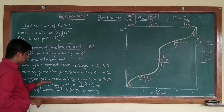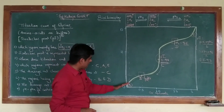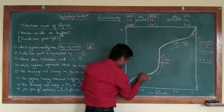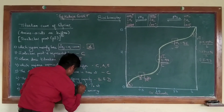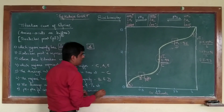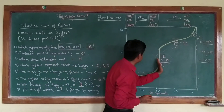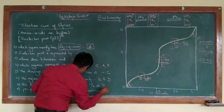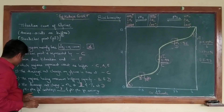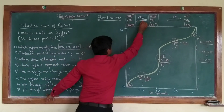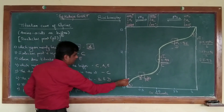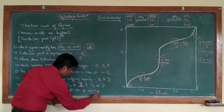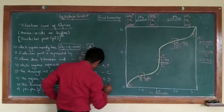The average net charge is plus one-half at point B, since the midpoint between plus 1 and 0 is plus one-half. The average net charge of minus one-half corresponds to point D, since it falls between 0 and minus 1. The pH equals pKa for the carboxyl group at point B, and the pH equals pKa for the amino group at point D.